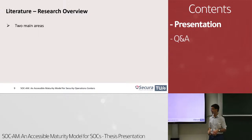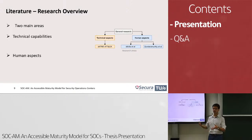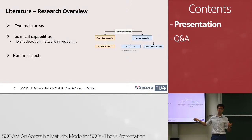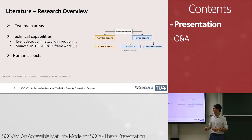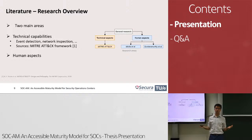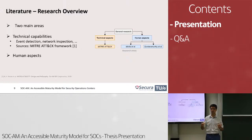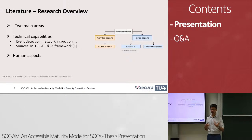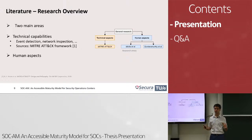Now that we know how to build a model, what do we put inside it? I focused my research on two main areas: technical capabilities and human aspects. Technical capabilities cover everything from event detection to network inspection — anything related to actually monitoring. For this, the main source was the MITRE ATT&CK framework, which is an open database of techniques and tactics used by attackers. It provides a lot of attacks, how to respond to them, and how to handle them, helping us understand the attacker's mindset and how to better prepare. From this multitude of domains and attack techniques, we can derive the different domains we want to look at in a SOC.